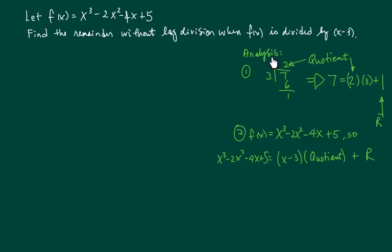All right, so here's the analysis. I have a very easy division over here. 7 divided by 3 with 2 as a quotient and 1 as a remainder. As you can see we write 7 as 2 times 3, quotient times what we're dividing by, adding the remainder.